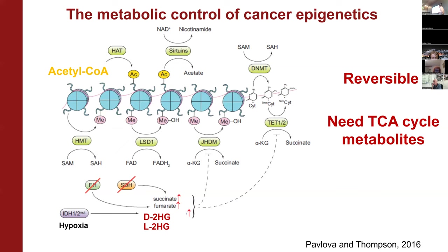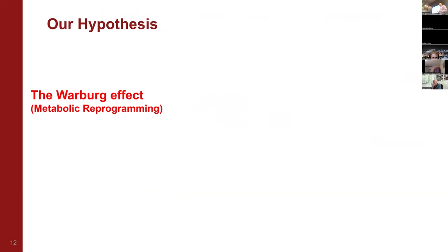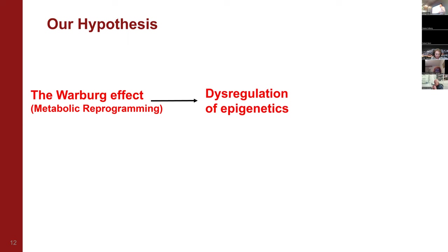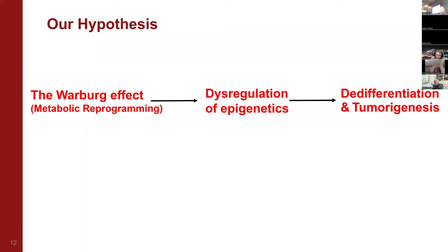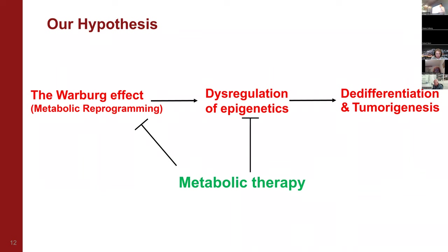Based on this knowledge, we can now reframe the original Warburg hypothesis. If we believe that the Warburg Effect and metabolic reprogramming lead to dysregulation of epigenetics, and eventually cause de-differentiation and tumorigenesis, then we can use metabolic therapy to block the Warburg Effect, inhibit this dysregulation of epigenetics, and reactivate differentiation to inhibit tumorigenesis.